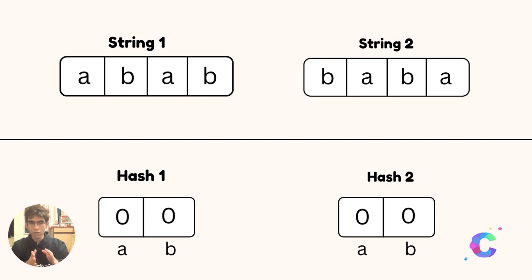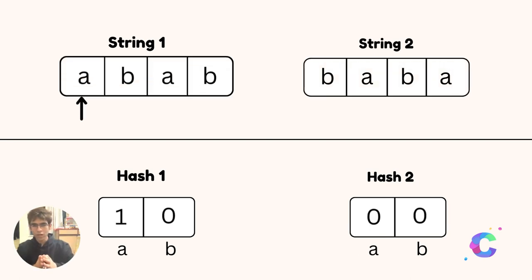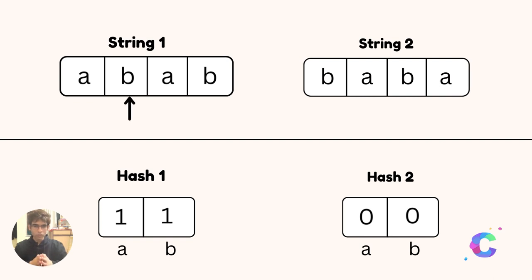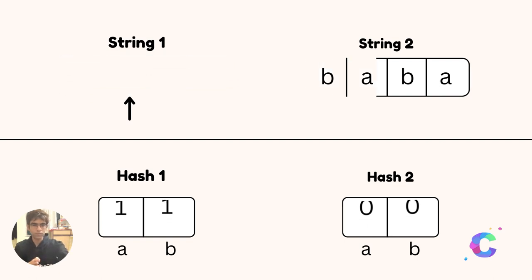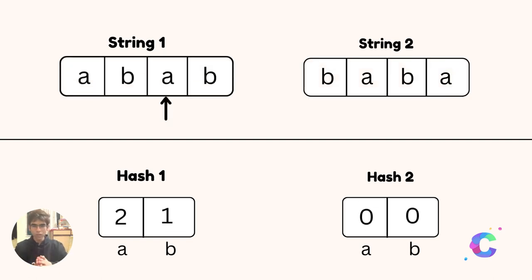The A count in string1 is 2 and the B count is 2, so hash1 should contain 2, 2. For that, we check the first character A and increment the counter of A in hash1 table from 0 to 1. The next character is B, so we increment the counter of B in hash1 table from 0 to 1. The third element is A, so we increment the count of A in hash1 table, which is 2 now. And finally we increment the counter of B in hash1 table. So the final hash1 table is 2, 2.